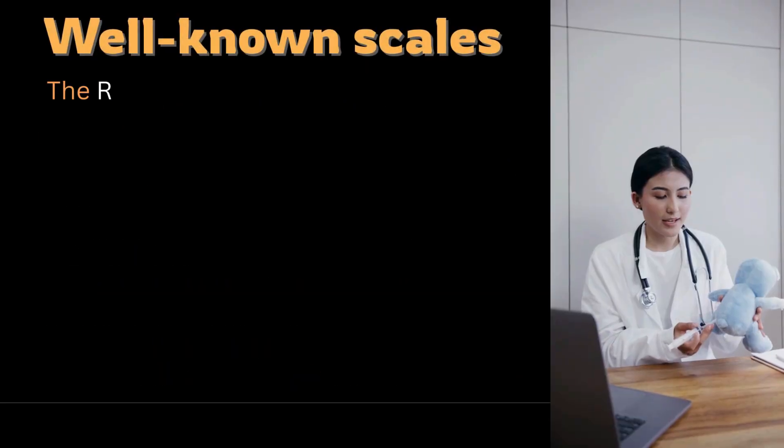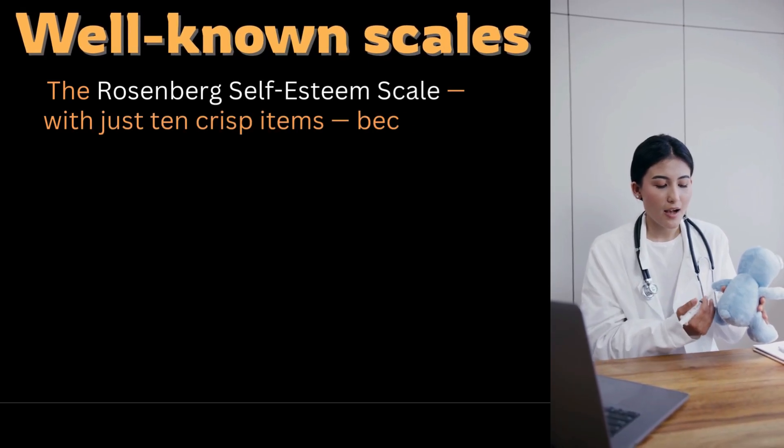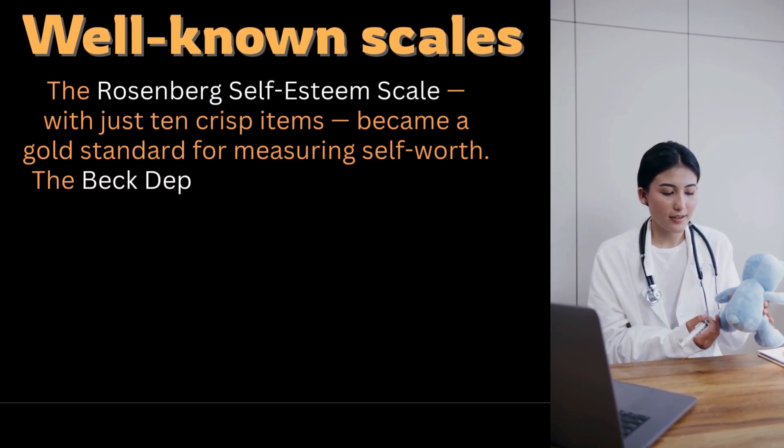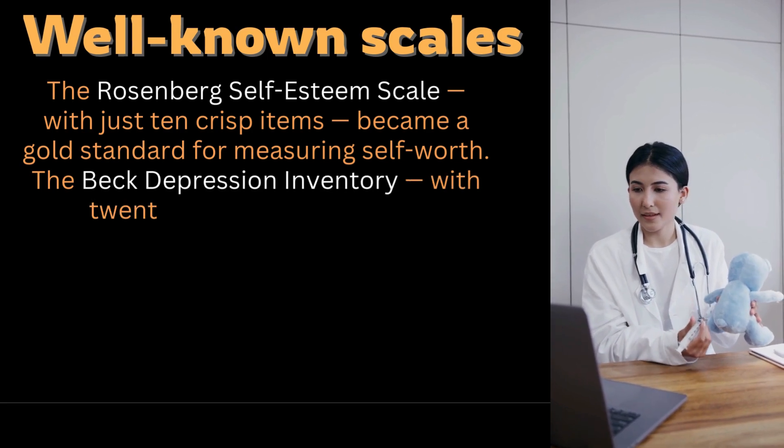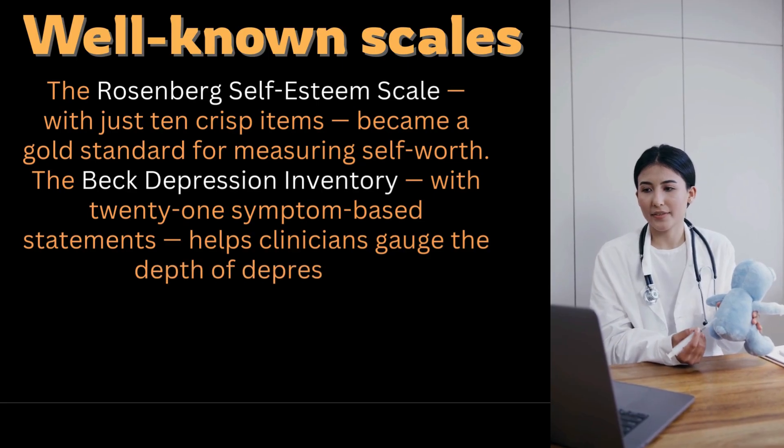These are some of the well-known scales. The Rosenberg self-esteem scale has 10 crisp items. It has become a gold standard for measuring self-worth. The Beck depression inventory with 21 statements helps clinicians gauge the depth of depression. The big five inventory elegantly captures our five major personality traits across 44 carefully worded statements.